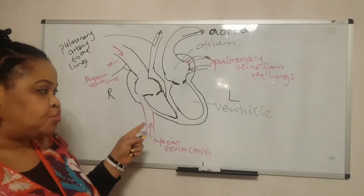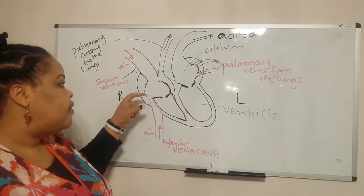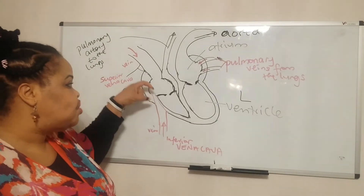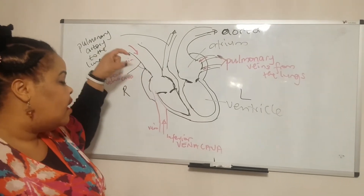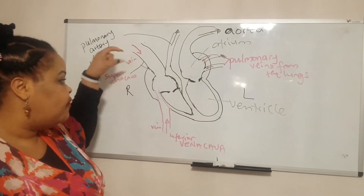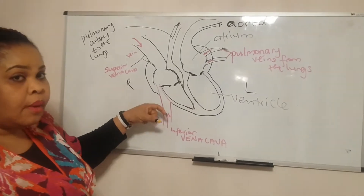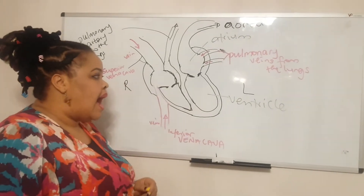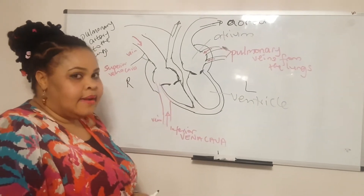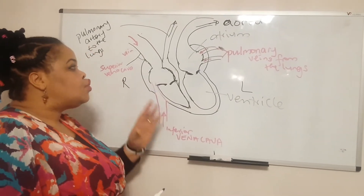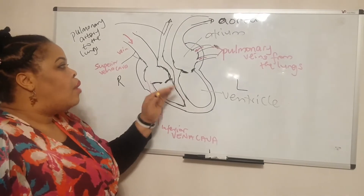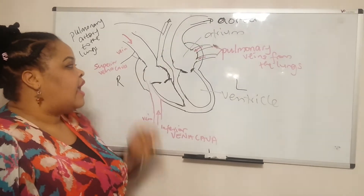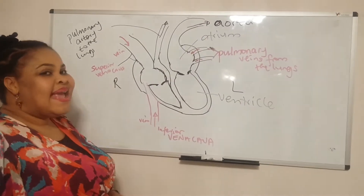Remember: when blood comes into the heart, it goes first into the atrium, and then from there it is pushed into the ventricle. From the atrium it goes into the ventricle before it is pushed out of the heart again.